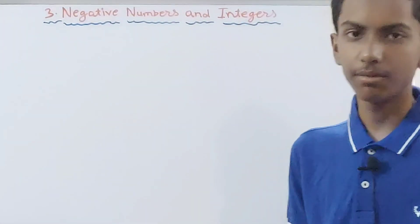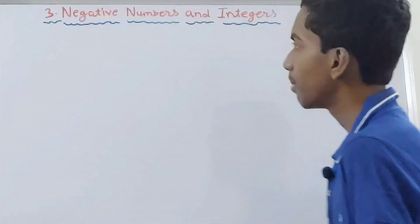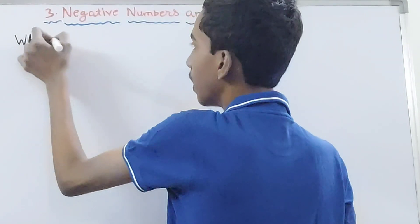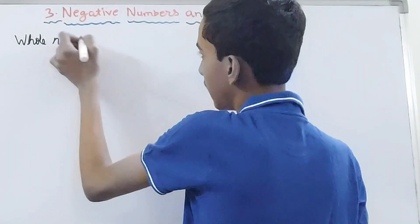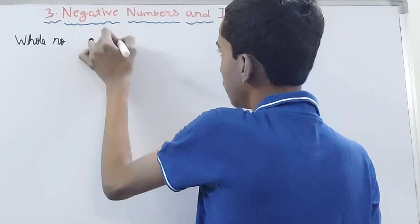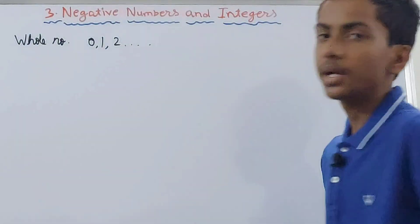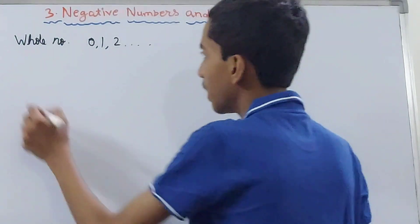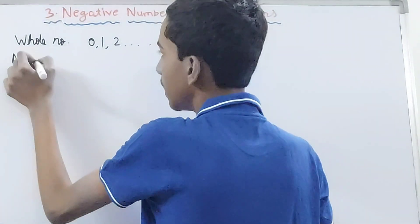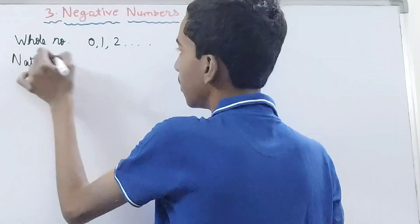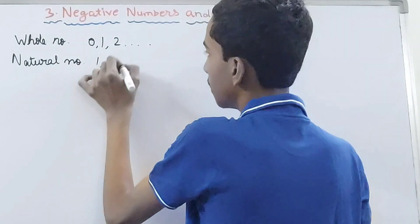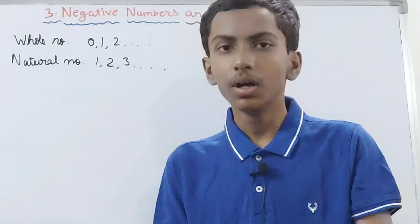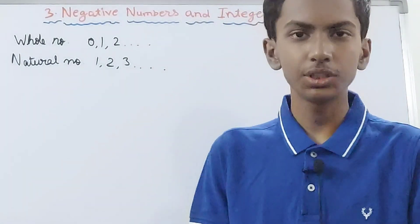First of all, we will begin with whatever we have learned so far. We have learned about two number systems: whole numbers, which begin from 0, 1, 2 and so on, and natural numbers, which begin from 1, 2, 3 and so on and don't have any end.